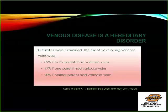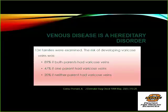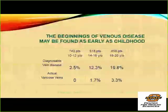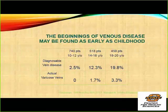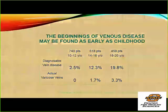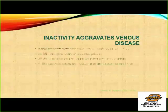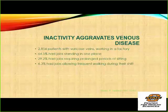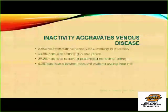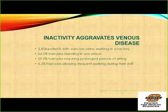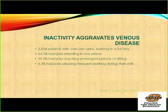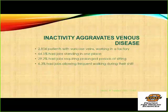Where do varicose veins come from? It's largely a hereditary disorder. If one parent has venous disease, there's about a 50% chance the child may have it. If both parents have venous disease, it's about 90%. If neither parent has it, you still have about a 20% chance — depending on occupation. Pharmacists, nurses, factory workers who stand all day are predisposed. Varicose veins, if you have genetic predisposition, can begin in childhood — diagnosable by ultrasound — but actual clinical varicosities take much more time to develop. Inactivity, prolonged standing, and prolonged sitting are also predisposing factors.